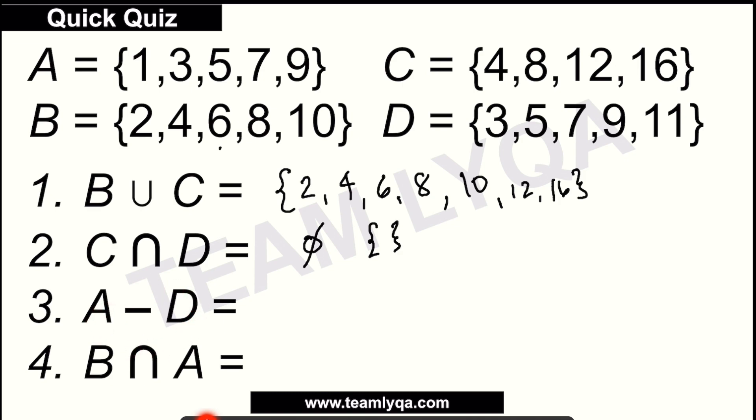Now, the difference of set A and set D. Now for this one, I'll draw the Venn diagram. So set A, set D. Now, do set A and set D have shared figures? You have 3. It's there too. I'll write it in the middle. You have 5. It's in A. It's in D too. So you have 5 here. 7. It's there. And 9. Again, these are in set A and also in set D.